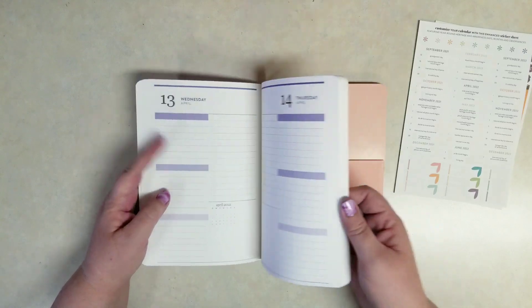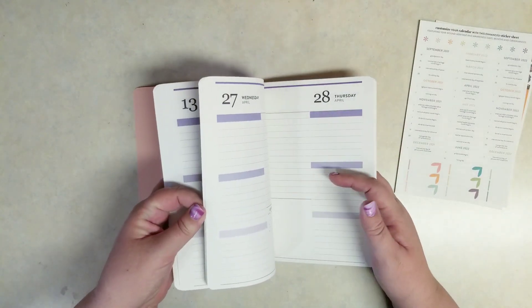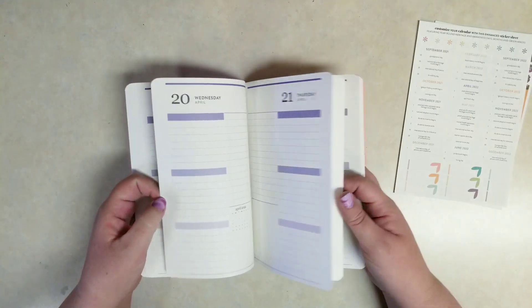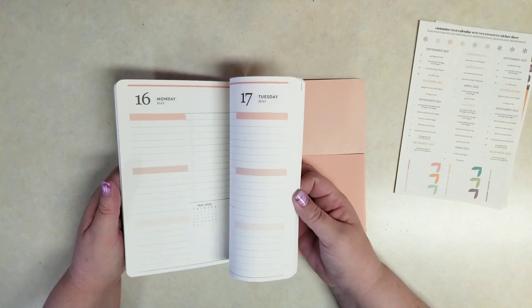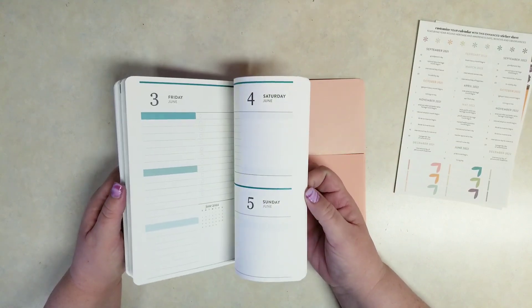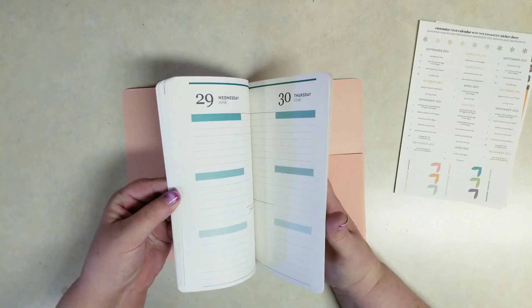And so the entire month is one color. And then when we get to May, it's going to switch to a different color. I think I was just trying to find it there. There we go. So you can see May is that peachy color and then June is that kind of teal or turquoise.